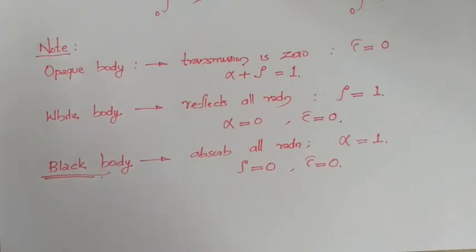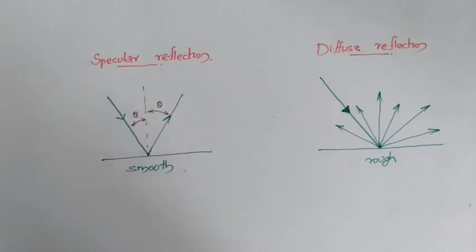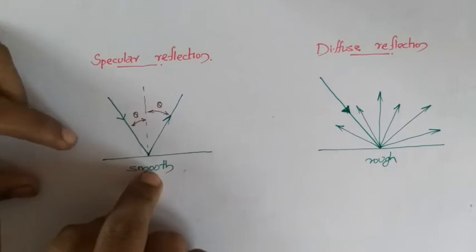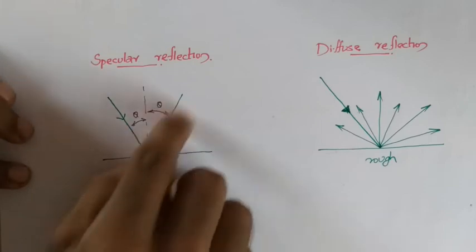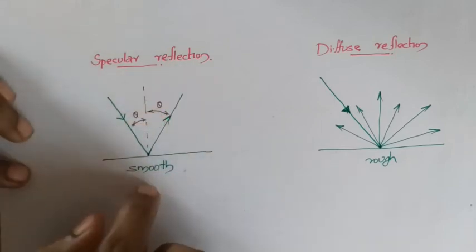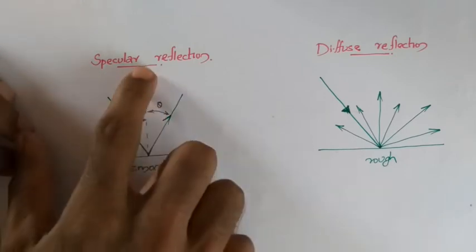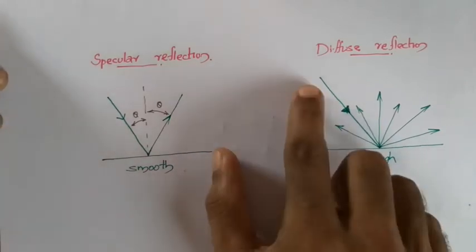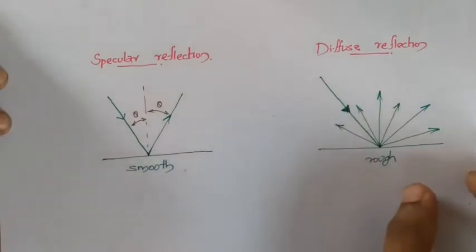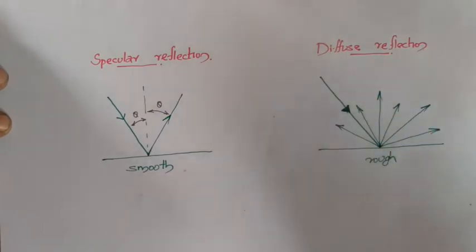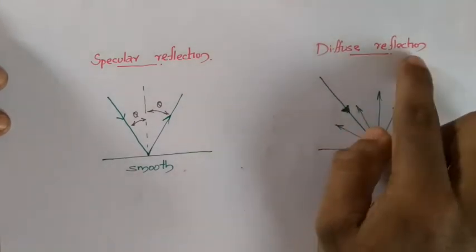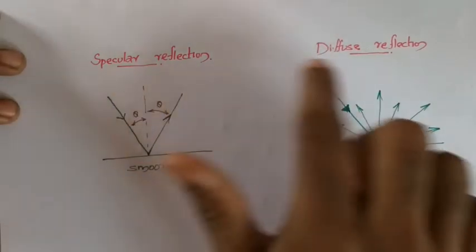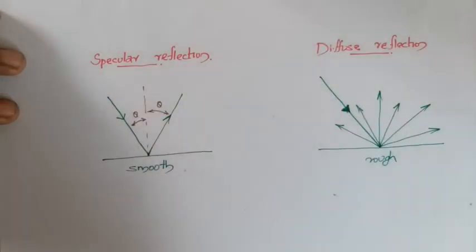There are two cases of reflection. If incident radiation falls on a very smooth, highly polished mirror-like surface, it will be perfectly reflected back at the same angle — this is known as specular reflection. If the surface is very rough, incident radiation will be scattered in all directions — this is known as diffuse reflection. In real bodies, reflections are never perfectly specular or perfectly diffuse but a combination of both.